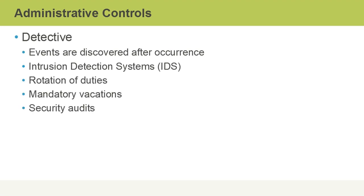Detective administrative controls are used to discover negative events that have occurred after they've occurred. Things like intrusion detection systems, or IDSs, which can detect anomalies and report on them, but don't stop them — that's where intrusion prevention systems would come in. Rotation of duties within an organization is considered a detective administrative control because when a new employee fills a position, they might notice a discrepancy or an anomaly from the previous person that held that role.